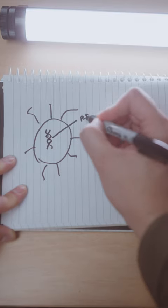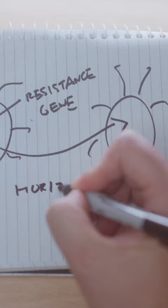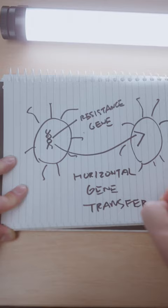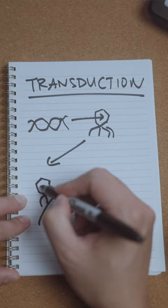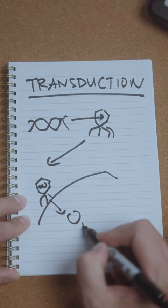Genes and proteins are involved, but how do they spread to different bacteria? Scientists call this horizontal gene transfer, where bacteria move genes to and from each other using a range of different mechanisms: conjugation, transformation, or transduction, and there's a viral phage involved.